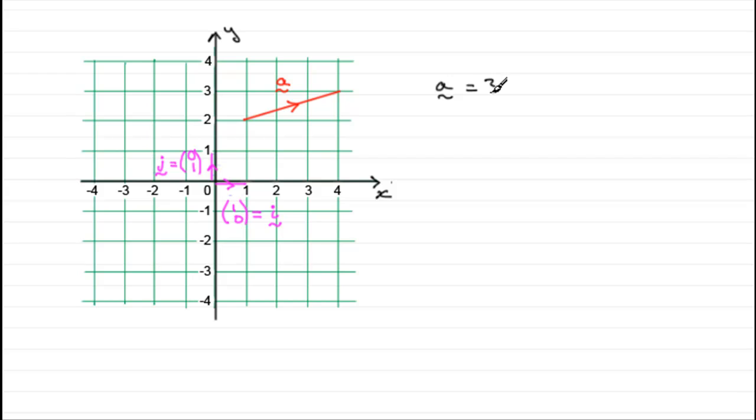So we would describe that vector A as being 3i plus j. As a column vector we know that it would be written as 3, 1. But in terms of the base vectors i and j, it would be 3i plus j.